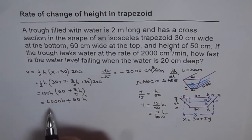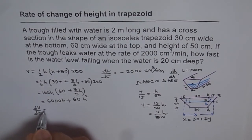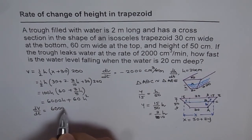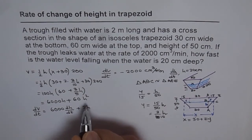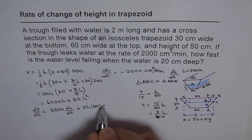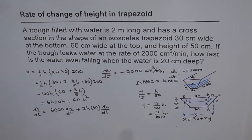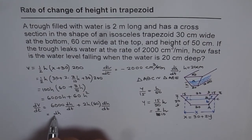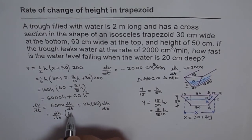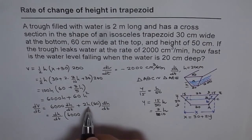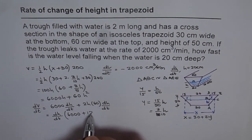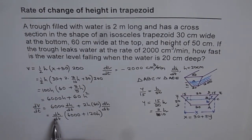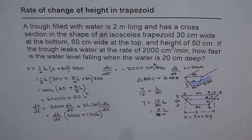From the volume expression V = 6000h + 60h², we differentiate with respect to time: dV/dt equals 6000 · dh/dt plus 120h · dh/dt. Factoring out dh/dt: dV/dt equals dh/dt times (6000 + 120h). Therefore, dh/dt equals dV/dt divided by (6000 + 120h). Now we can plug in h equals 20 centimeters.